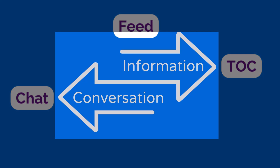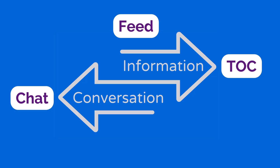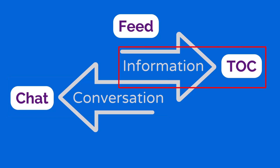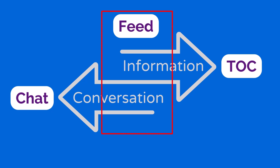Another consideration is the type of interaction you're trying to create. Are you looking to generate more conversation, or are you looking for more information to be shared? If you're heavy on conversation, a chat feature works really well for that. The table of contents is on the other end — built mostly for information sharing, with engagement very much in support of that information. An activity feed is often useful when you want both information and conversation happening together, letting you share posts and nurture conversation in the comments.